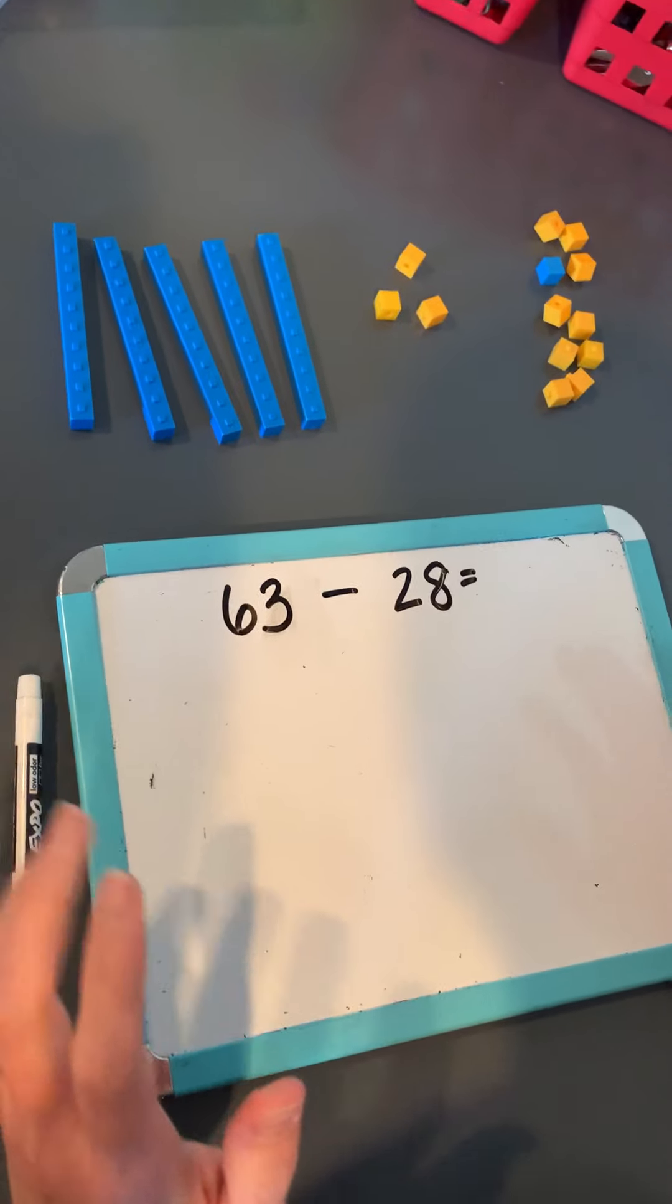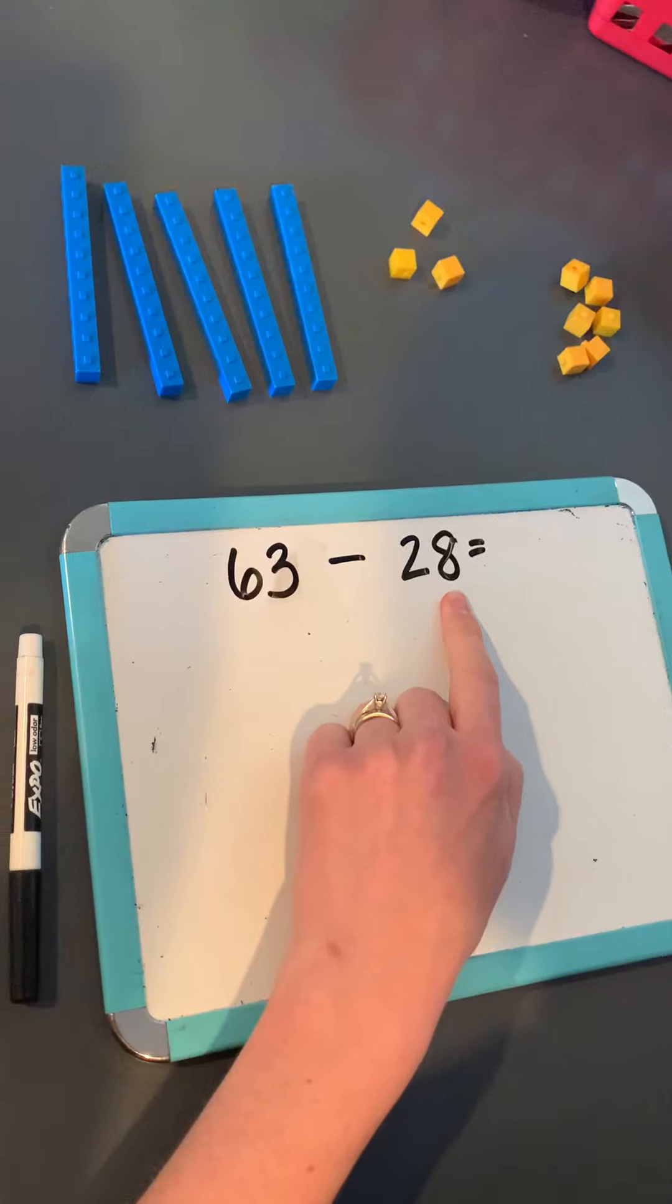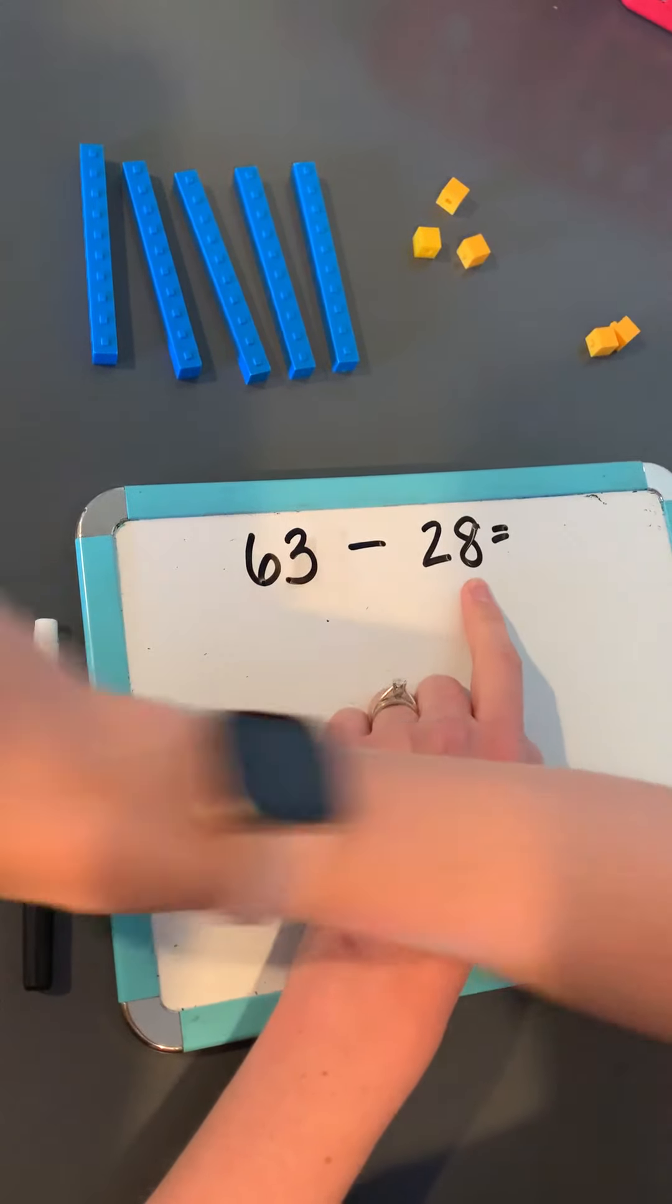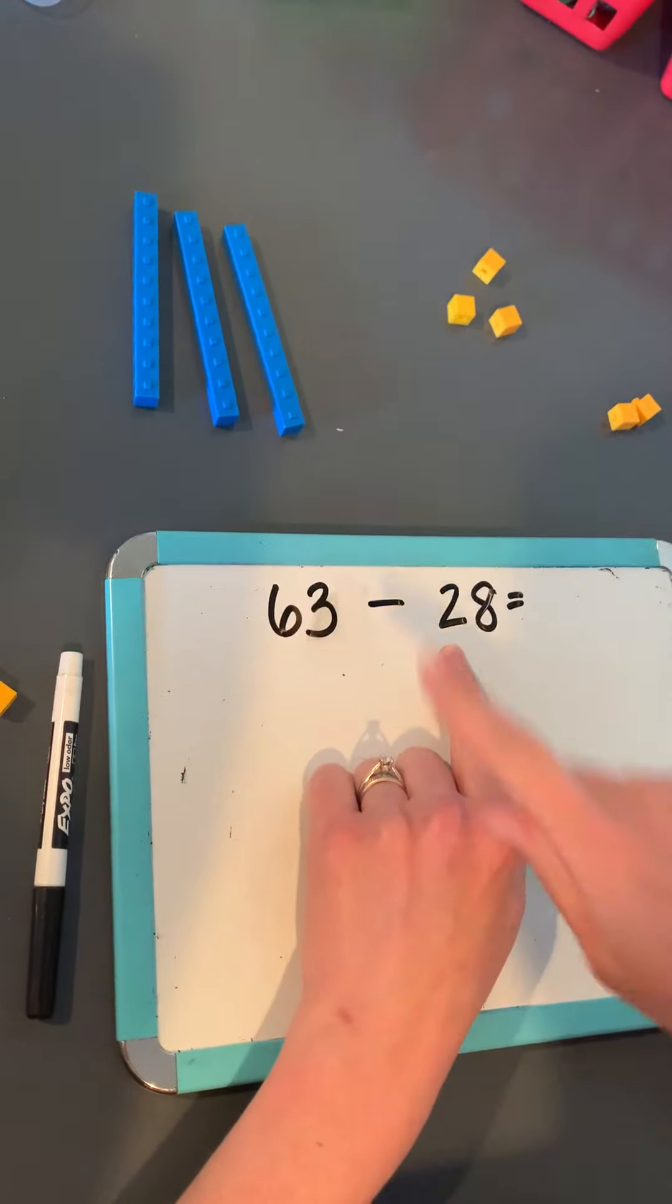Now I have enough to take away my eight ones. So I'll subtract 2, 4, 6, 8. And then we take away two tens. And I'm left with my answer.